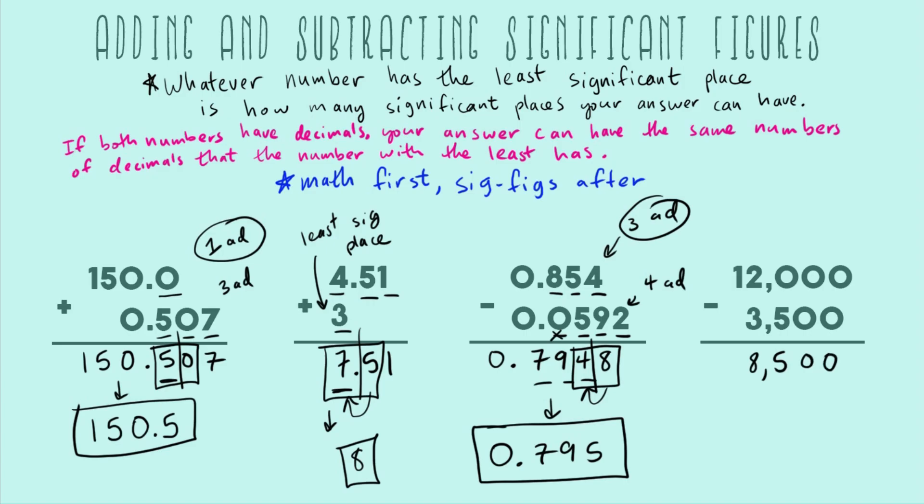Now to think about sig figs. This is a significant place because it is a sig fig. This is a significant place because it also is a sig fig, it's a non-zero. All three of these zeros don't count as a significant place because they're just placeholders. Since there's no decimal in this number, none of these zeros are sig figs. 3,500 is kind of similar. Both of these are sig figs because they're non-zeros. These zeros don't have a decimal point, so they're not sig figs.